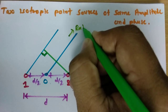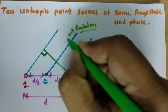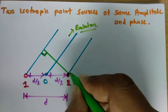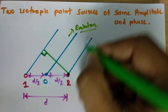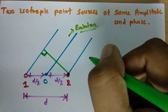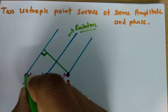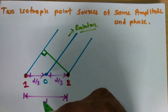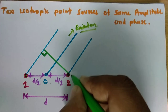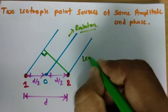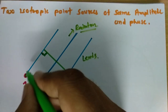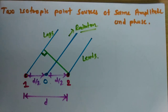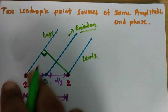The radiation direction is shown here. Radiation from source 2 reaches the observation point first, while radiation from point 1 lags with respect to point 2. So the phase of source 2 leads with respect to the phase of source 1, and that is how the phase difference arises.